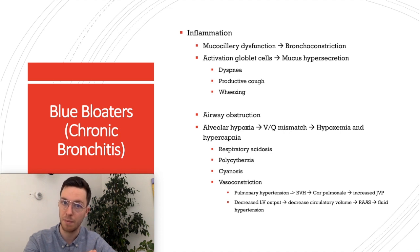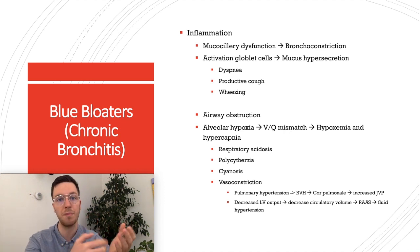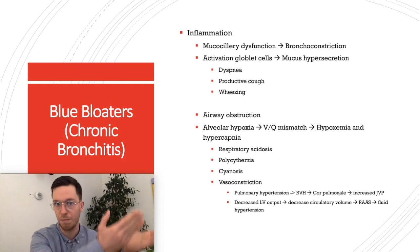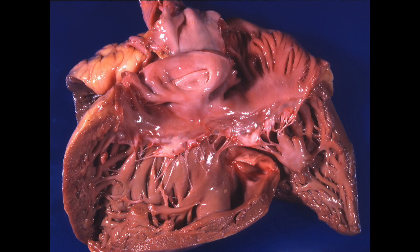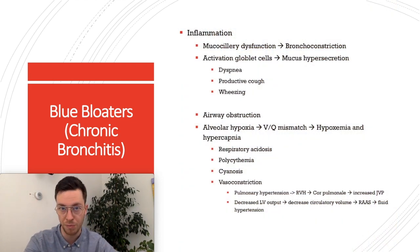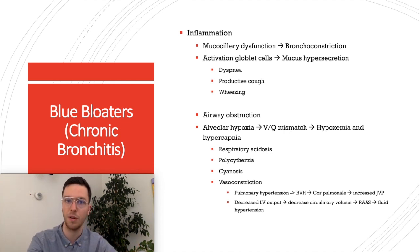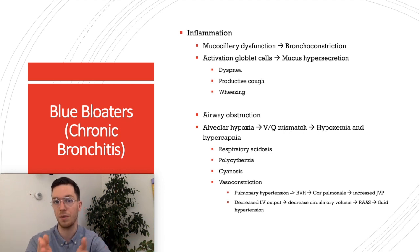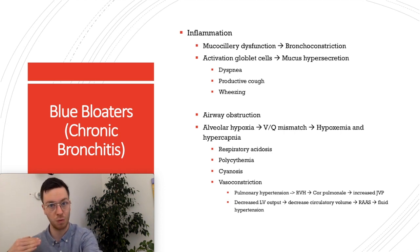Vasoconstriction occurs because of alveolar hypoxia: some alveoli are obstructed and not ventilated properly, so your body responds by limiting blood flow to inactive alveoli and redirecting it to active ones. However, this vasoconstriction leads to pulmonary hypertension, which can cause hypertrophy of the right ventricle and your classic cor pulmonale — this also explains the increased jugular venous pressure. Because of the cor pulmonale, less blood is pumped through the left side of the heart, leading to decreased left ventricular output, decreased circulatory volume, RAAS activation, fluid retention, and therefore more hypertension. So it gets worse and worse.